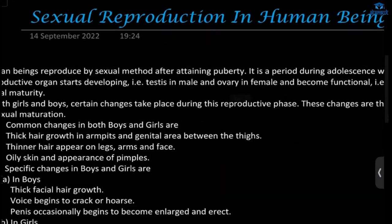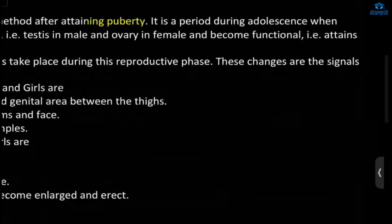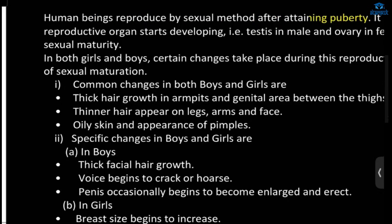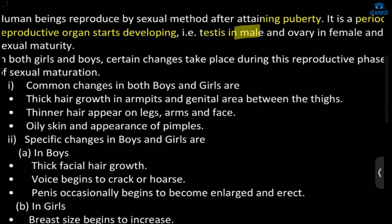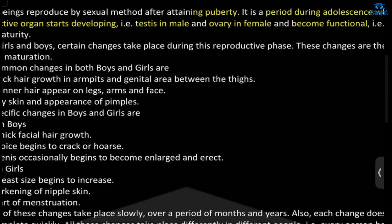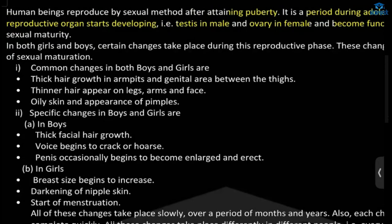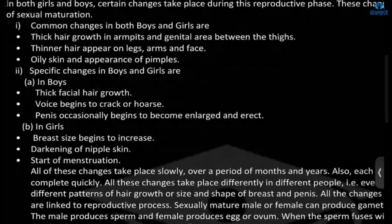Human beings reproduce after attaining a certain ability — a period during adolescence when reproductive organs start developing. The testis in the male and the ovary in the female become functional. That is the time when reproduction begins. During this reproductive phase, there are some changes in boys and girls.